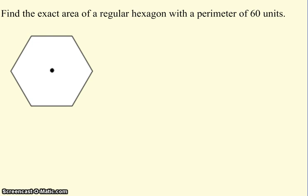So here, consider these next four videos a chance to practice using what you've just learned. So this problem says find the exact area of a regular hexagon with a perimeter of 60 units. Well, we're told we have a regular hexagon. A hexagon has six sides. The picture proves that it has six sides, and since it's a regular hexagon, all six of those sides are the same.